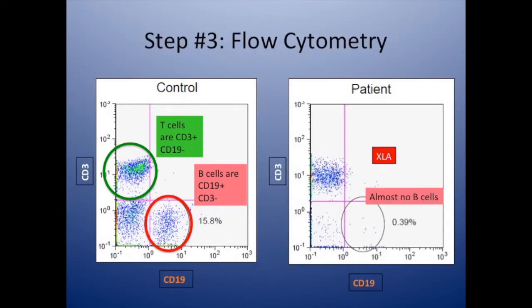Here is an example from a patient with known immune deficiency. This patient has a normal population of CD3-positive T cells, but when you look at the CD19-positive B cells, there are almost no cells detected. This is a patient known to have X-linked agammaglobulinemia, a condition in which patients have no B cells due to a mutation in the BTK gene.